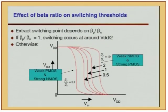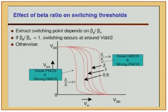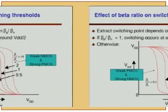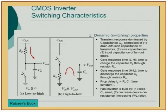CMOS inverter transfer characteristics are said to be size-independent or 'ratioed,' but W/L does play a role. VOH and VOL have no size dependence — that is the original definition of ratioed circuits — but in reality, if W/L of either the P-channel or N-channel is changed, one will become stronger than the other, and therefore speed will vary with size. This is crucial for our analysis.